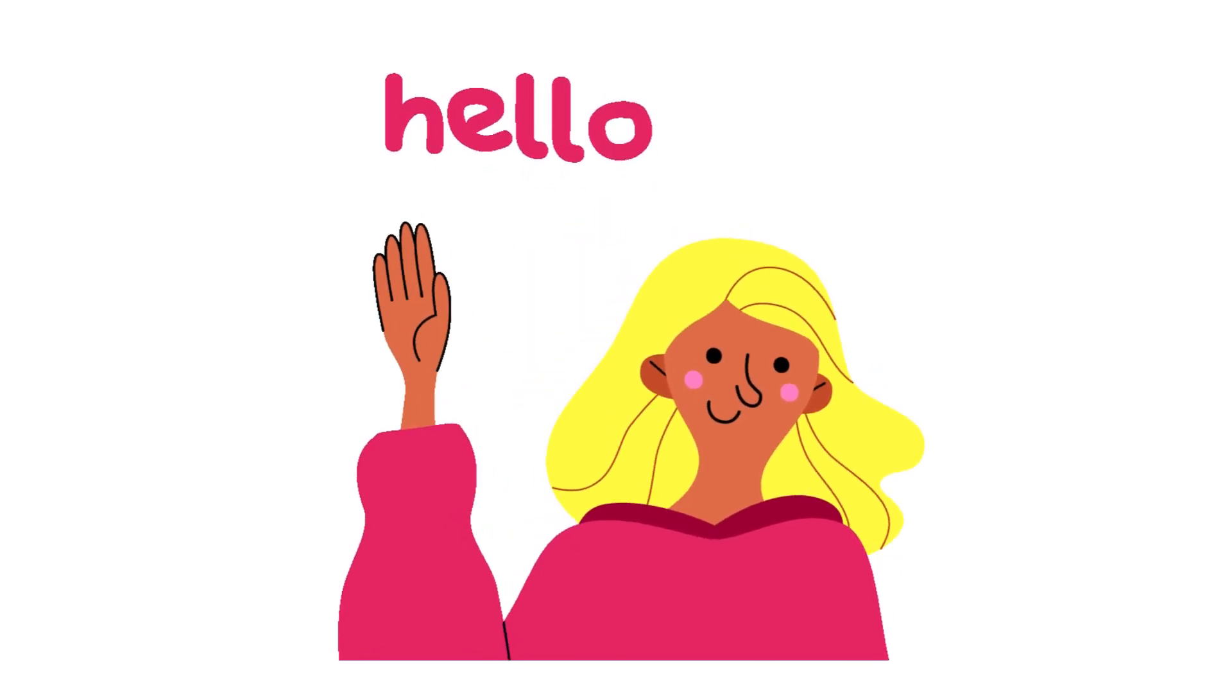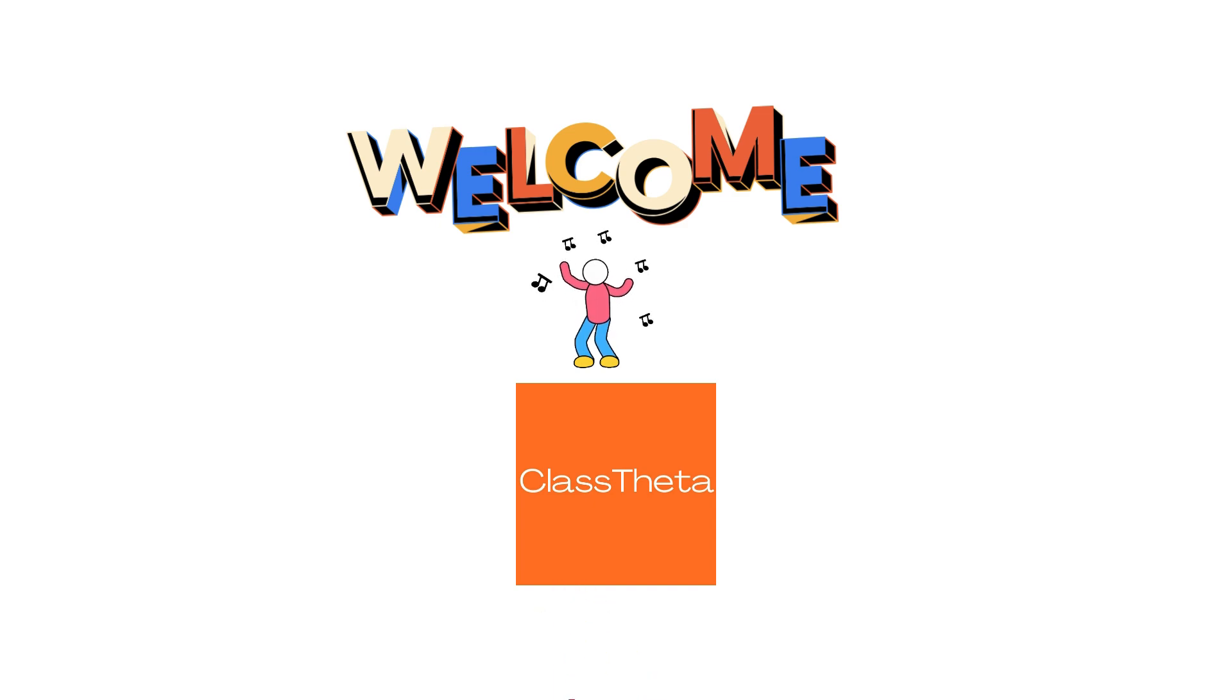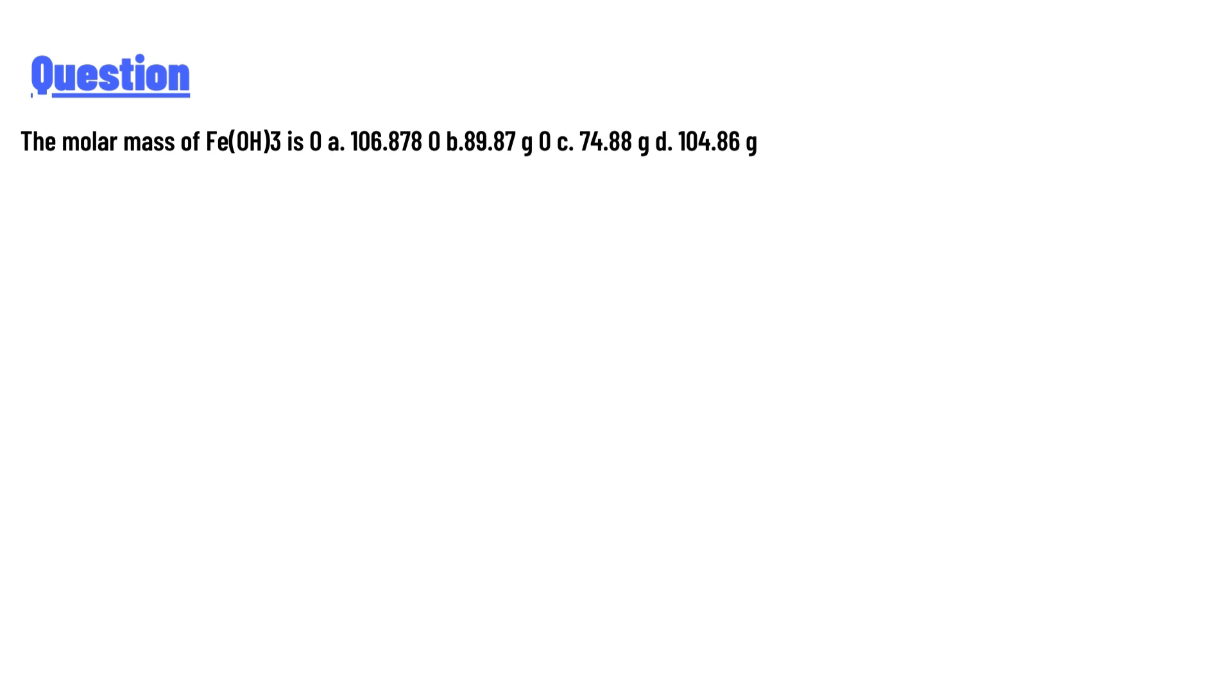Hello everyone, how are you? I am Akrash, your teacher here, and I will teach you different questions and their answers. So I welcome you on classtheta.com. Our today's question is: the molar mass of Fe(OH)3 is a) 106.878, b) 89.87, c) 74.88, or d) 104.86.